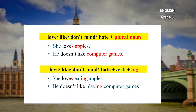But if we want to put a verb after the verbs love, like, don't mind, and hate, we must add the -ing ending to the verb, and the verb becomes a gerund. For instance, 'She loves eating apples.' Here we put an -s ending because there is 'she,' which is third person singular, and we added -ing to the verb. Another example: 'He doesn't like playing computer games.' Even with the negative form 'doesn't like,' we still add -ing to the verb 'play.'